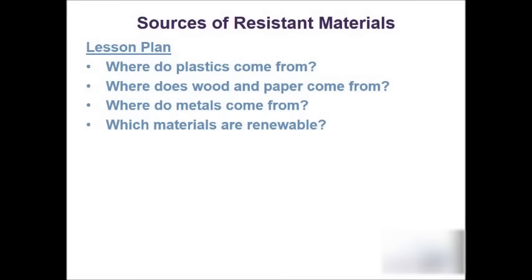This video is about the sources of resistant-based materials — things like wood, metals and plastics. At Key Stage 4 level for GCSE, what we basically need to know is where plastics, wood and paper or board, and metals come from, and which of these materials are renewable and non-renewable, which we have discussed in the video on sustainability as well.